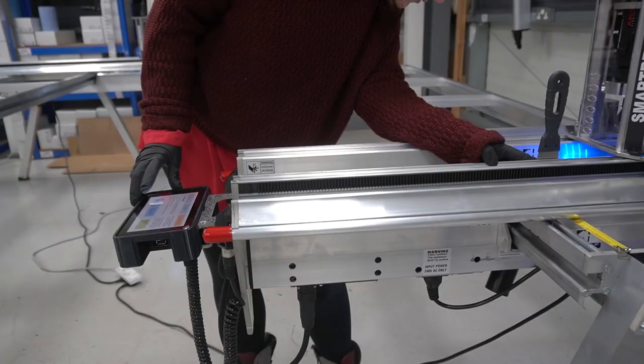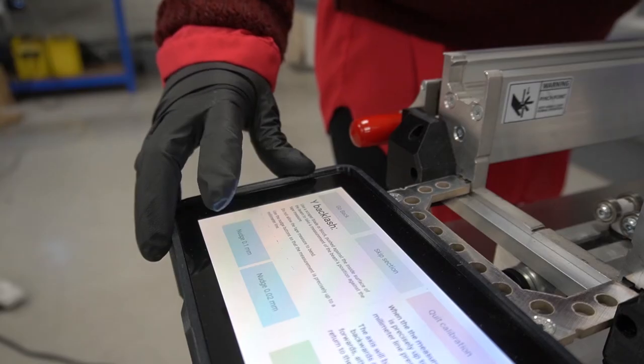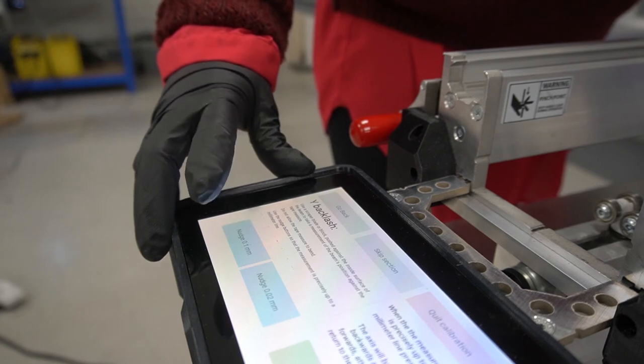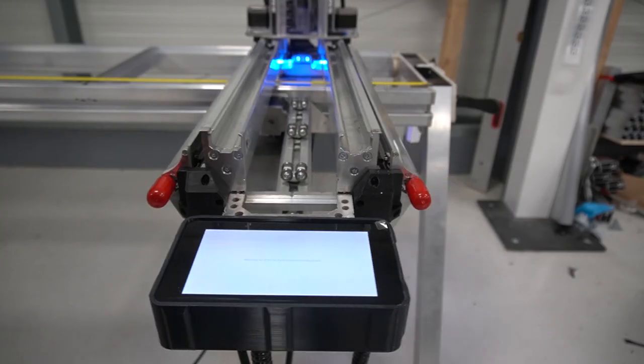Take your first measurement using the nudge buttons to ensure you are precisely up to a millimeter line. Then press test.